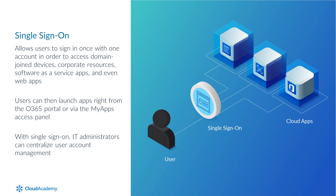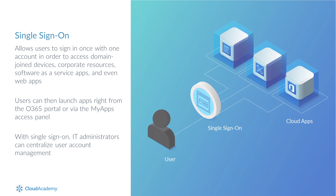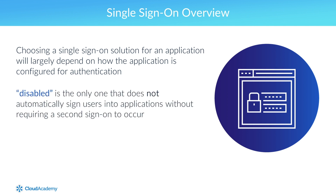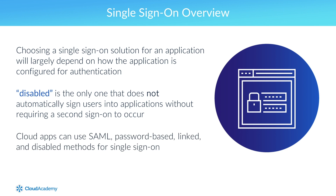In this lecture, we are going to discuss the various single sign-on options available when designing an identity management solution that incorporates single sign-on. Choosing a single sign-on solution will largely depend on how the application is configured for authentication. Cloud apps can use SAML, password-based, linked, and disabled methods for single sign-on, where SAML is the most secure method. On-prem apps configured for application proxy can use password-based, integrated Windows authentication, or IWA, header-based, linked, or the disabled method for single sign-on.